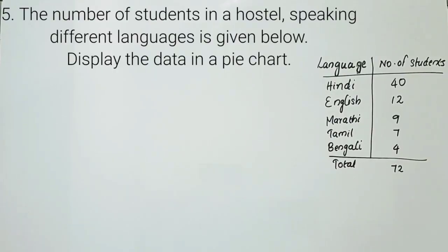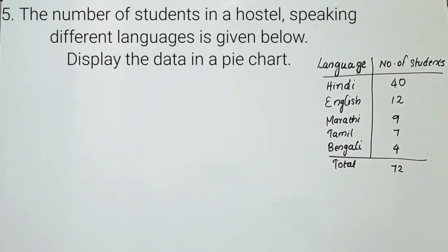How to do exercise 4.1 question number 5, and the next textbook exercise 5.2 question number 5. The playlist is available. Let's take a look at question 5: the number of students in a hostel speaking different languages is given below. Display the data in a pie chart.